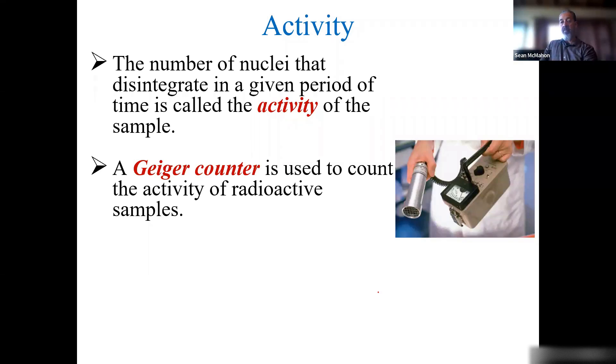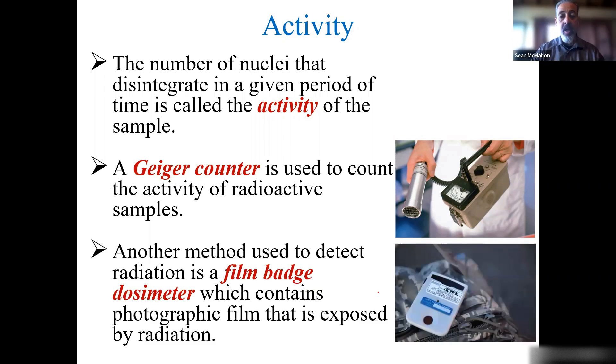What that clicking is: the radioactive sample hits the gas inside the Geiger counter and ionizes it. Every time it ionizes it, it gives a click. Another method is film badges or dosimeters in the healthcare field, which have photographic film that can be exposed. You can see the amount of radiation absorbed by the individual wearing this badge.